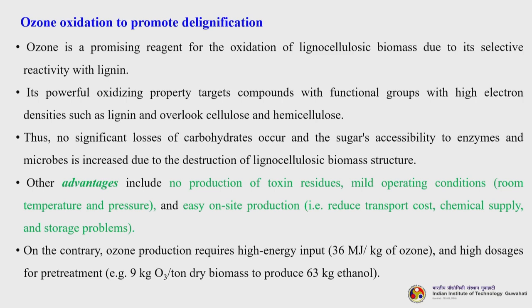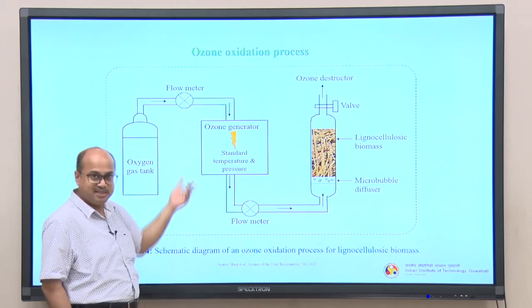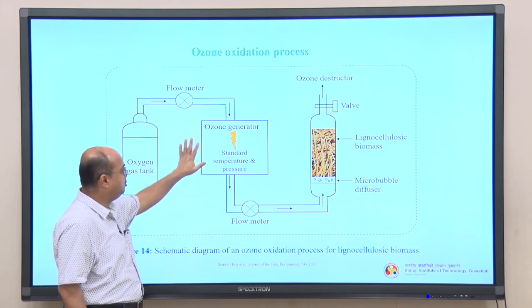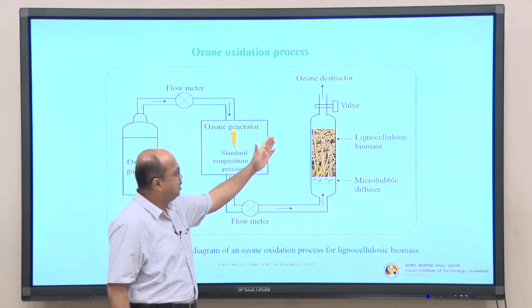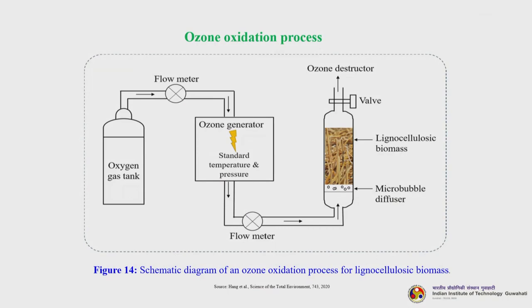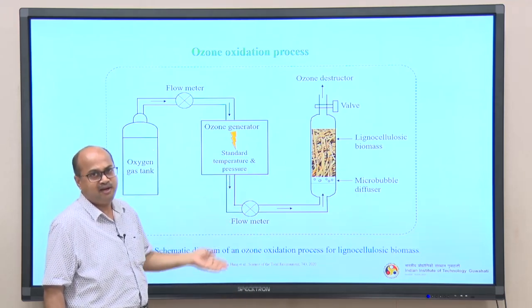Ozone is a promising reagent for oxidation of lignocellulose biomass due to its selective reactivity with lignin. Its powerful oxidizing property targets compounds with high electron density such as lignin while overlooking cellulose and hemicellulose, so no significant carbohydrate losses occur and sugar accessibility to enzymes is increased. Advantages include no production of toxic residues, mild operating conditions at room temperature and pressure, and easy on-site production reducing transport cost. However, ozone production requires high energy input - 36 MJ per kg of ozone - and high doses; for example, 9 kg ozone per ton of dry mass to produce 63 kg of ethanol.